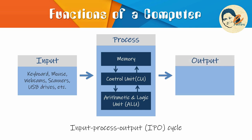Next, output. After processing the input data, the CPU sends the processed data to the output devices. By default, computers use monitors as the default output device. Other output devices are printers, speakers, graphic plotters, etc.